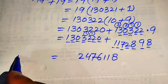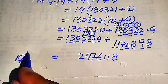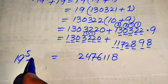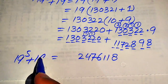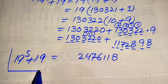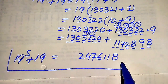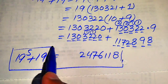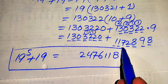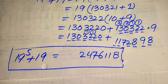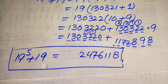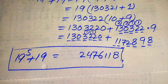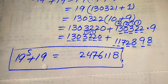Finally, 19 to the power of 5 plus 19 equals 2,476,118. This is our final answer. Thank you so much for watching this video — please subscribe to my channel for more exciting videos.